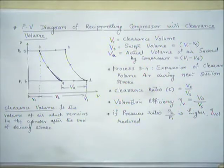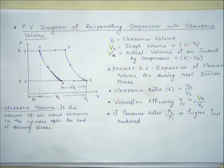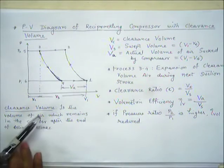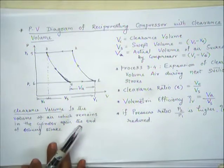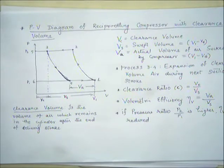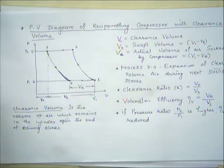Clearance volume is the air which remains in the cylinder after the end of the delivery stroke. After the delivery stroke, all the air is not delivered into the receiver — some part of air still stays within the cylinder and occupies the space inside. That is called the clearance volume. We can observe this on the PV diagram.